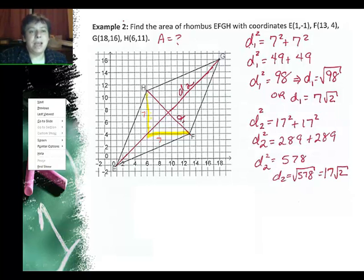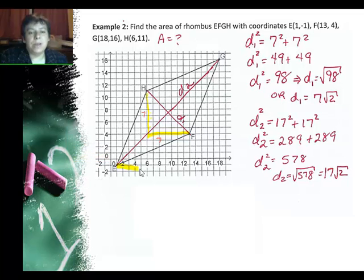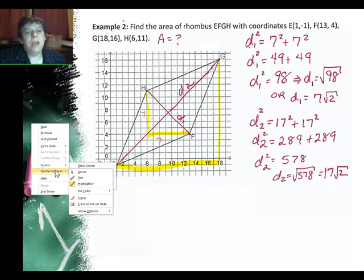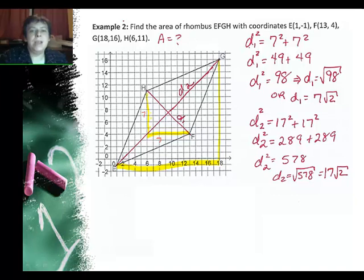Now I'm going to look for the second diagonal. And the way I got that is I also made a right triangle. I counted from here to here. And that's 17 and this is 17. So in this particular example, this is also another special right, which is 17 here and 17 here, which is 17 square root of 2, or if you use Pythagorean theorem, square root of 578.